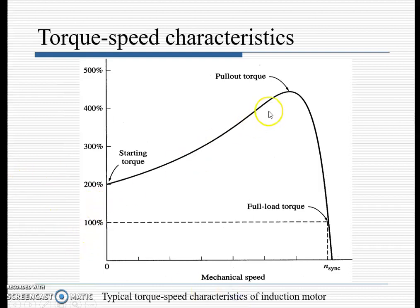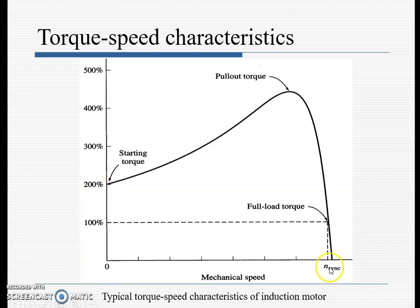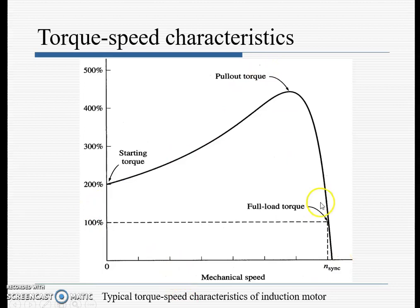These are the torque-speed characteristics. On the x-axis is mechanical speed. As speed increases, the torque varies: at starting the torque increases linearly, but after reaching the maximum point the torque decreases.